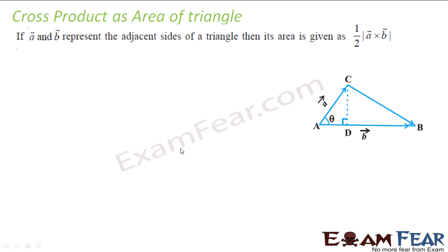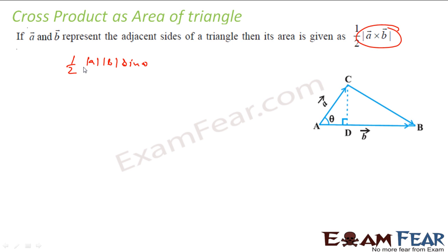If A and B represent adjacent sides of a triangle, then its area is given by ½|A×B|. This is easy to prove because A×B is nothing but the magnitude of A times the magnitude of B times sine theta, and ½|A×B| will be ½ of this.